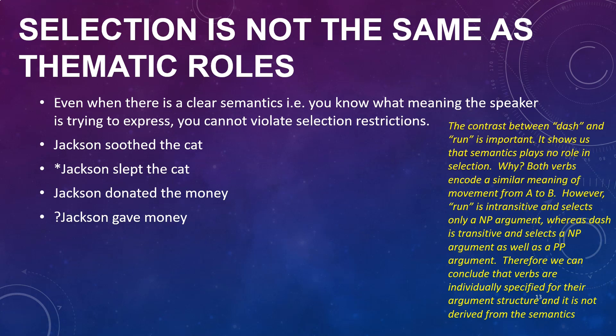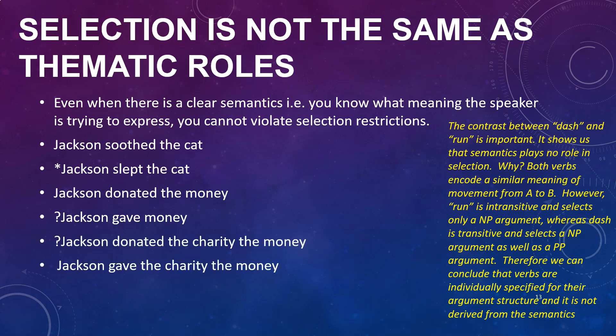'Donated' selects two noun phrases and is quite happy with that, whereas 'give' selects three: 'Jackson gave the money to the charity.' Compare that with 'Jackson donated the charity the money,' which sounds odd, whereas 'Jackson gave the charity the money' is perfectly fine. These two sentences have exactly the same semantics but one is odd and one is not. This suggests these verbs are unique in their selection restrictions — 'donated' is not ditransitive in the same way 'give' clearly is. So even though both verbs would have the same theta roles to assign, it is the selection restrictions that cause ungrammaticality.